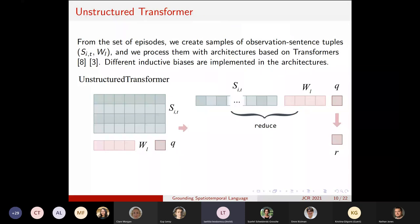So from this set of episodes, we create some samples of observation-sentence tuples S_I,T, W_L. And we process them with some architecture based on transformers which have enjoyed really good performance in natural language and also other tasks in recent years. We train them with supervised learning to predict if a given sentence is true or false with the given temporal trace of objects that we consider.